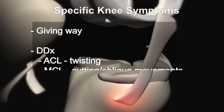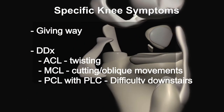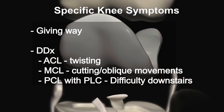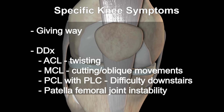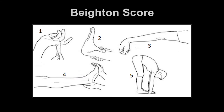This is also true for medial collateral ligament injuries. Posterio cruciate ligament injuries and posterolateral corner injuries may manifest as instability, particularly with difficulty going downstairs. Patellar instability may also present with giving way. In a patient with any signs of instability, it is reasonable to assess for signs of hypermobility using a laxity score such as the Beighton score.